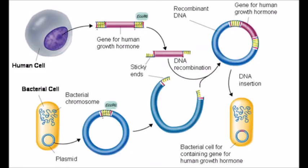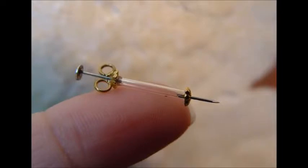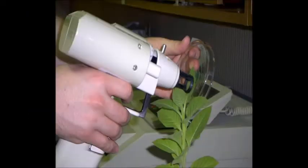Biologists can also insert the necessary genes into a bacterium, which can infect the target organism. This works for Agrobacterium, which is usually pathogenic to plants but is very useful for transferring genes. Or, biologists could just insert the genes directly into the target organism using a very small syringe or a gene gun.